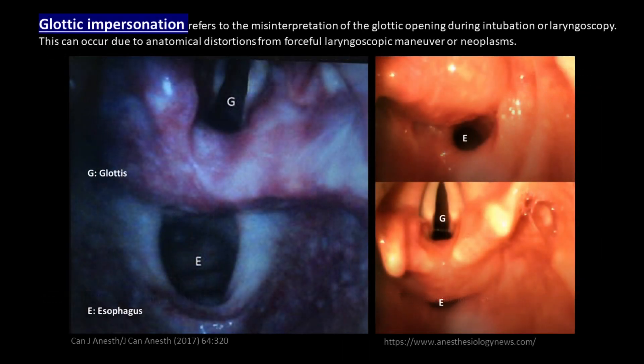As shown in this slide, the vocal cords and glottic opening are revealed when the laryngoscope is pulled back a little. Glottic impersonation refers to the misinterpretation of the glottic opening during intubation or laryngoscopy. This can occur due to anatomical distortions from a forceful laryngoscopic maneuver or neoplasms.